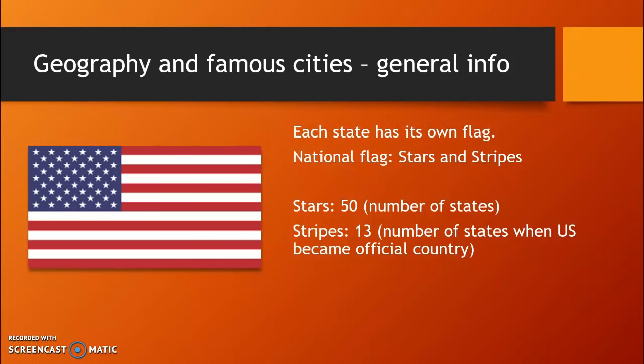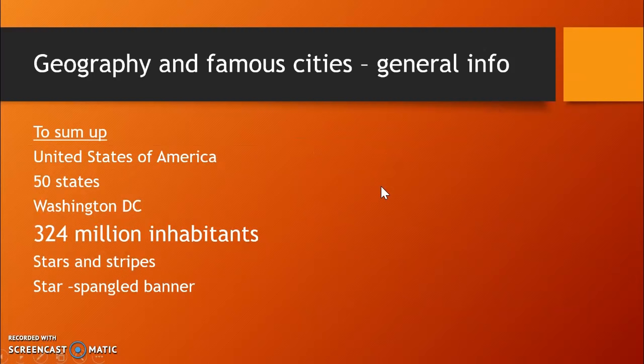The name of the flag is Stars and Stripes. The national anthem is called the Star Spangled Banner. To sum up, the United States of America are the 50 states, with the main capital being Washington DC. About 324 million people live in the USA, and every year this number grows because of immigration.